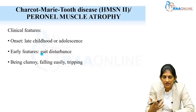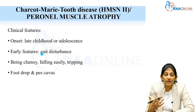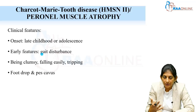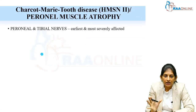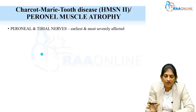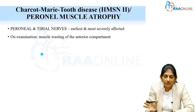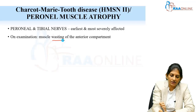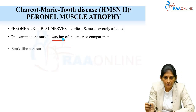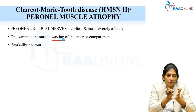Symptoms include a clumsy walk, falling easily, a feeling of weakness while walking, easy tripping, and difficulty walking upstairs. Foot drop will be present, and on examination there can also be pes cavus. The earliest and most severely affected nerves are the peroneal and tibial nerves, meaning the anterior compartment of the lower limb is severely affected. On examination you will find muscle wasting of the anterior compartment.